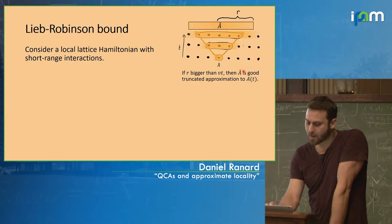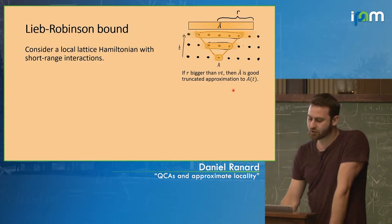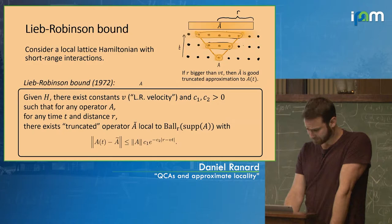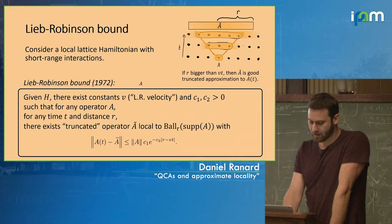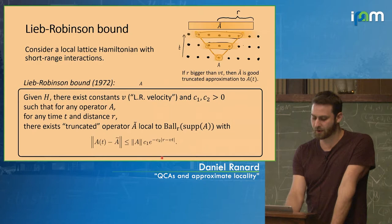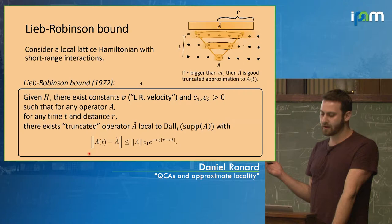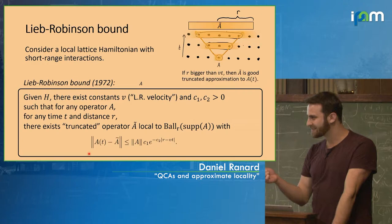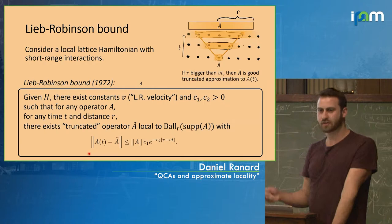The statement is roughly that if we look at an evolved operator, it should be approximately contained within the light cone of diameter VT, where V is some velocity. There should be some truncated operator A-tilde which is a good approximation when restricted to a region R that's bigger than the light cone. The theorem is: there's some velocity V such that for any operator A, any time T, and any distance R, if R is sufficiently bigger than VT then there exists an A-tilde close to A(T) in this sense. Matt Hastings' review on locality is a great reference for Lieb-Robinson bounds.